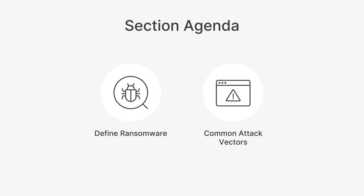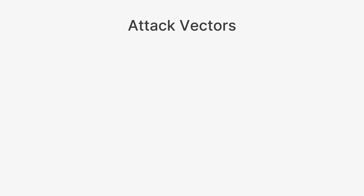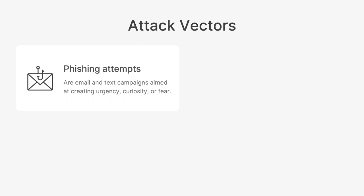Ransomware is a type of malware that encrypts your systems and data until a sum of money has been paid. There's no guarantee that you'll gain access to your data again even after you pay the ransom — the criminals could just take the money and run. There are several different attack vectors they'll attempt to utilize. One of the most common are phishing attempts — some sort of strange email about a billing issue or an invoice you don't recognize.